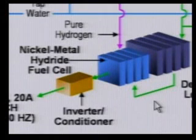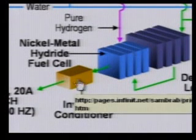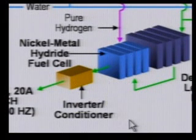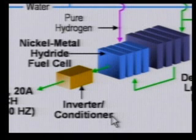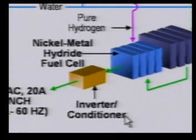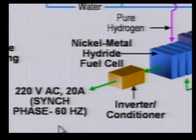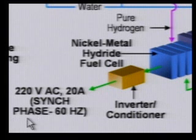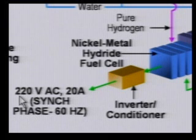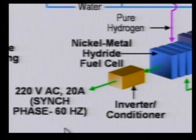The stored energy goes into an inverter that turns DC into AC. If you want to sell the energy back to the electrical grid, you need it to match the phase of the grid — phase matching is critical. I'm assuming the energy selling back to the grid would be 220 volts AC at 20 amps, and the phase would be synchronized to match the grid.